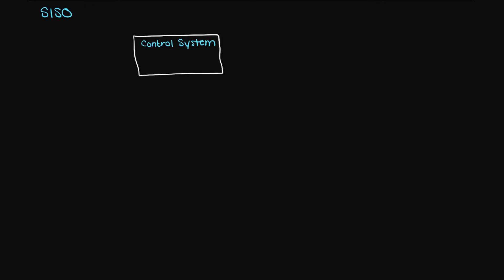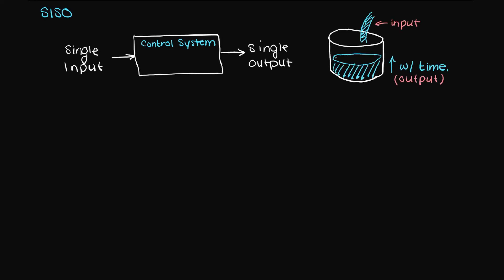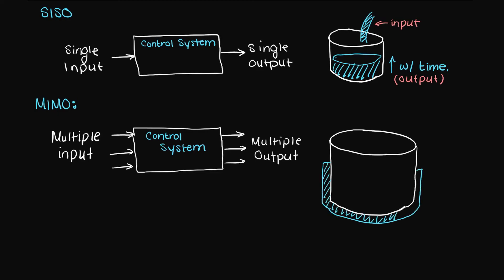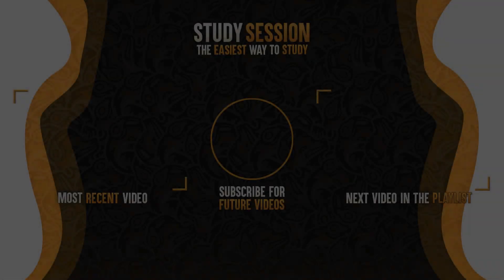like a SISO, which means single input, single output, so this could be like a water level in a bucket under a sink, versus a more complicated multi-input, multi-output, a MIMO, which for example could be like controlling the tank's temperature, pressure, and level of water in the tank.